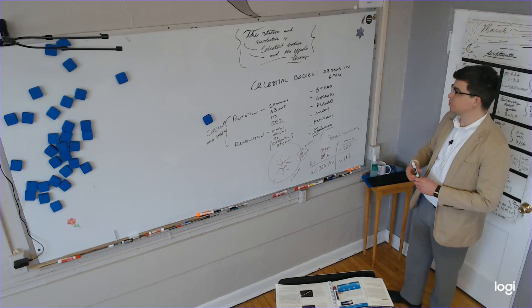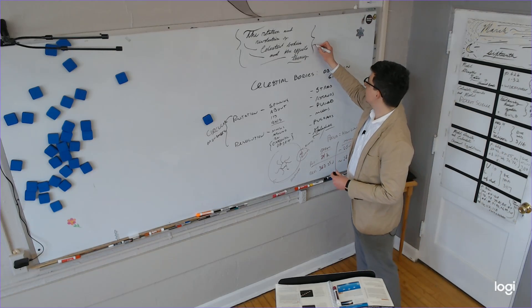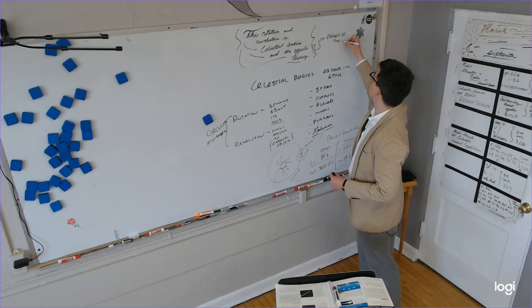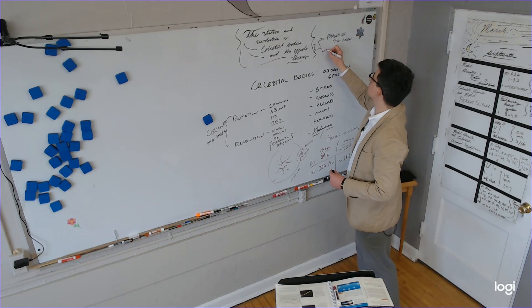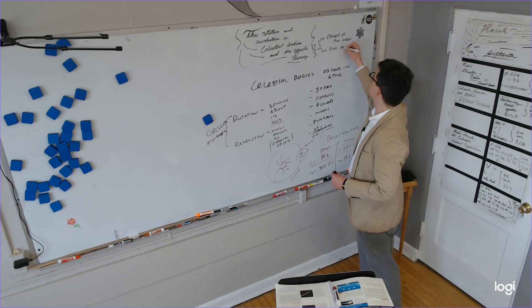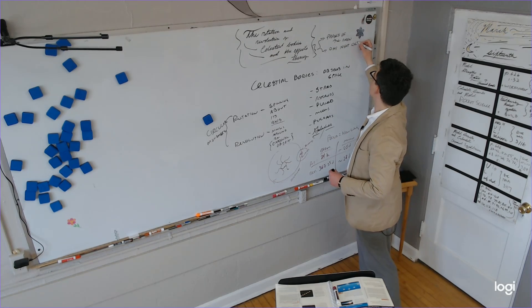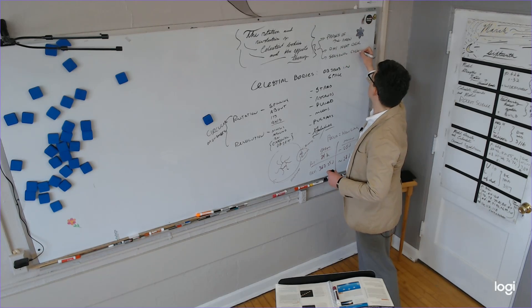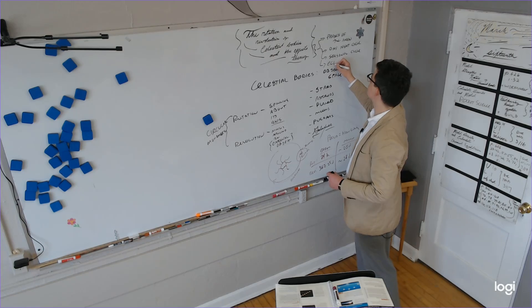Remember we learned about the tidal forces when we were talking about the creation of Earth? But since it's tidally locked, these two things are the same. So the same side always faces the Earth. So now let's move on to moon phases because now we're talking about the effects thereof. We're going to talk about four things. Phases of the moon, day-night cycle, seasonal cycle, and eclipses. Let's talk about them in that order.